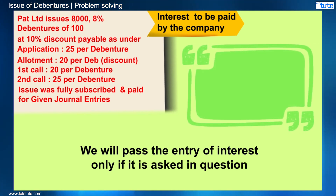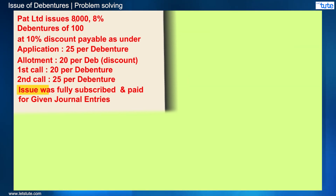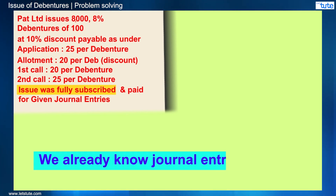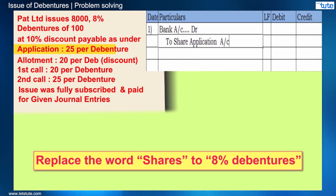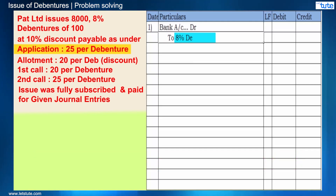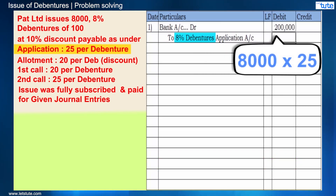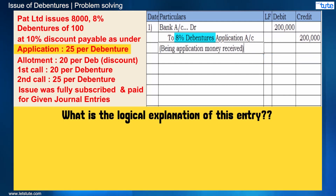In a practical case, there will be a fixed time at which the interest is paid. The question says the debentures were fully subscribed. As you already know the journal entry for shares, we will only replace the word shares with 8% debentures. So what is the logical explanation for this entry?